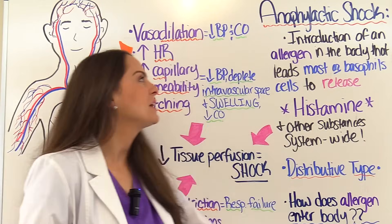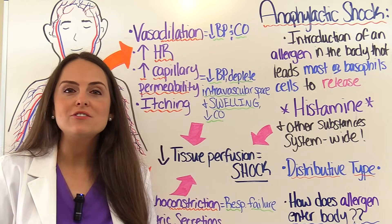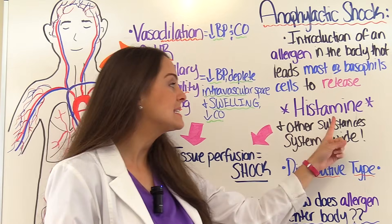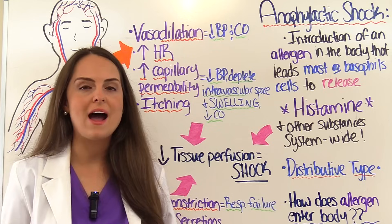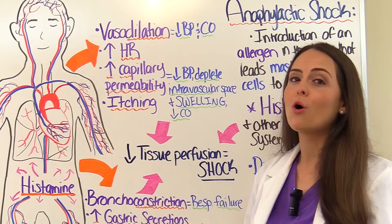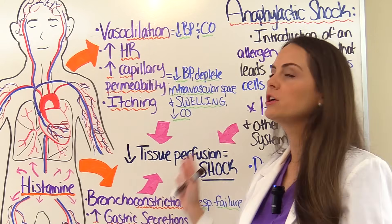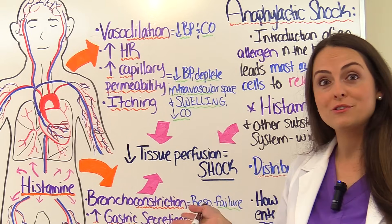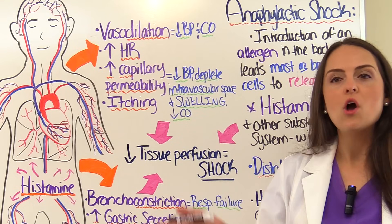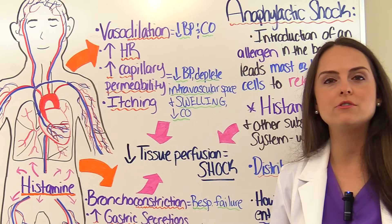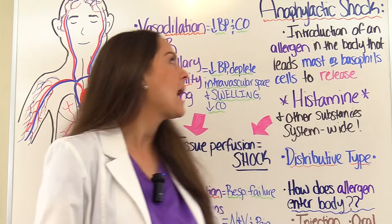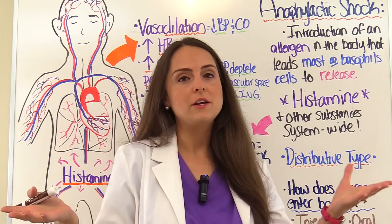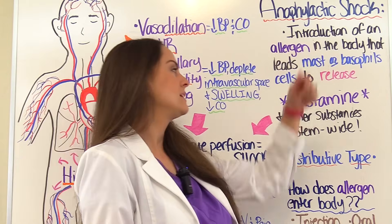Anaphylactic shock occurs when there's an introduction of an allergen in the body, and this introduction leads the mast cells or basophils to release massive amounts of histamine and other substances system-wide. Histamine plays a huge role in anaphylactic shock and causes signs and symptoms that lead to a decrease in tissue perfusion. Whenever we have decreased tissue perfusion, we have shock.